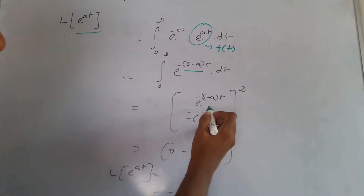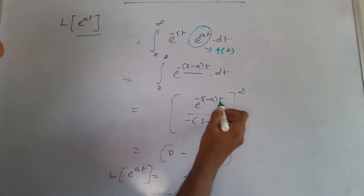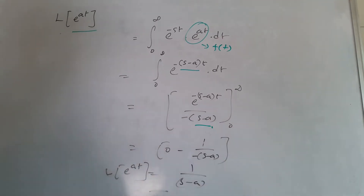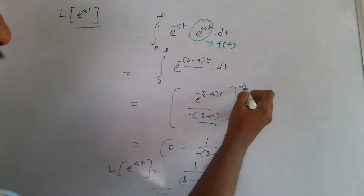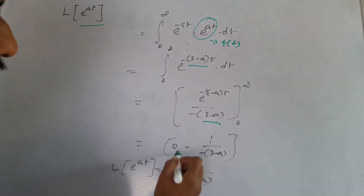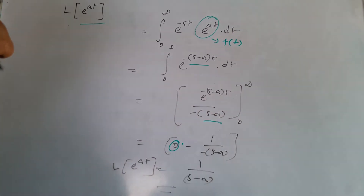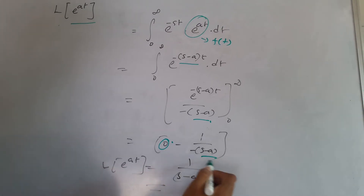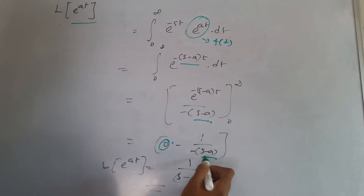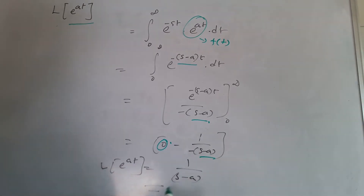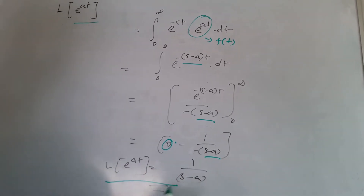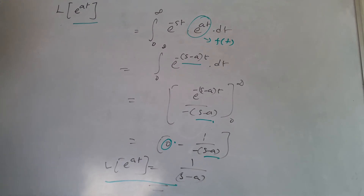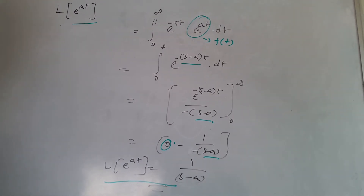The integration of e to the power of mx gives us the standard result. Substituting the limits, e to the power of minus infinity equals 0, so this becomes a plus, and we get the Laplace transform of e^(8t) as 1 over (s minus 8).